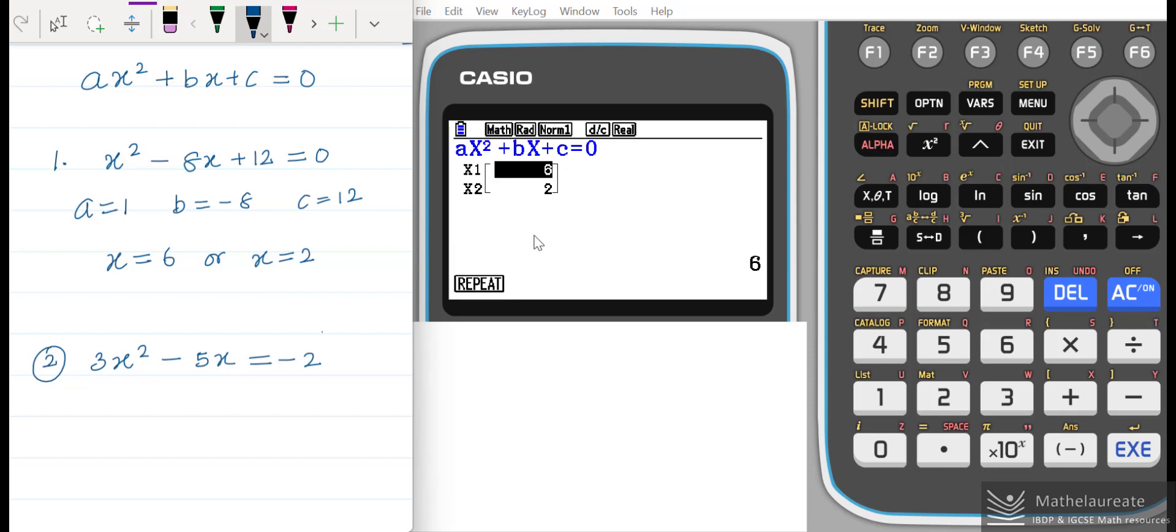You can rewrite in the correct form: 3x squared minus 5x. All the terms should be in the left side, so bring this constant also to left side. Negative 2 comes to the left side and becomes positive 2, which is equal to 0. Thus this is in the form of ax squared plus bx plus c equal to 0.